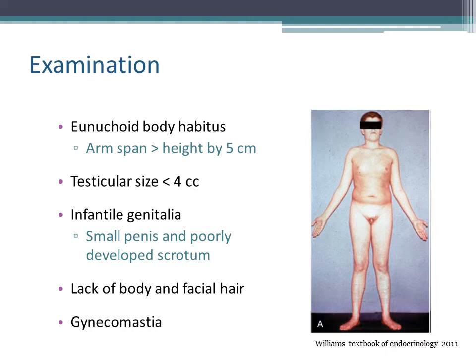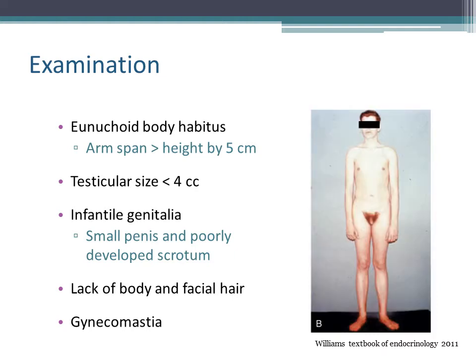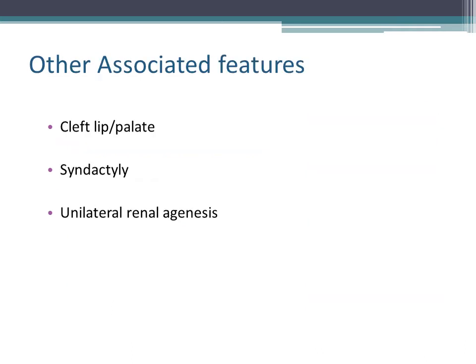You can compare the picture to the one after treatment with testosterone and see how the body changed significantly. Other associated features with Kallmann syndrome include cleft lip or palate, syndactyly, and unilateral renal agenesis.